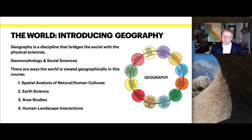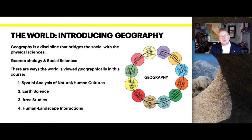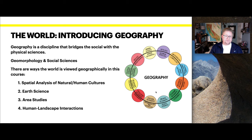There are ways the world is viewed geographically. In this course, we'll be looking at spatial analysis of both nature and human cultures, Earth sciences, area studies, and human-landscape interactions. The diagram on the right shows that geography is a really broad term — placing geographic language in the middle and related disciplines on the outside. So whether you're studying anthropology, sociology, history, or urban planning, I'd call it cultural geography, historical geography, or urban geography. Geography is really about spatial place and people.